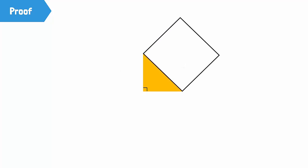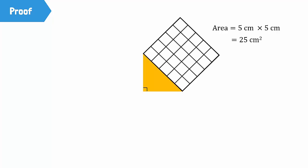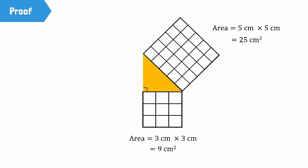If we draw a square at the hypotenuse, its area will be length times length, or 5 cm times 5 cm, which is equal to 25 square cm. Drawing a square at the base will give us a square with an area of 3 cm times 3 cm, which is equal to 9 square cm.